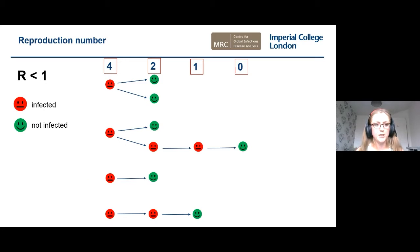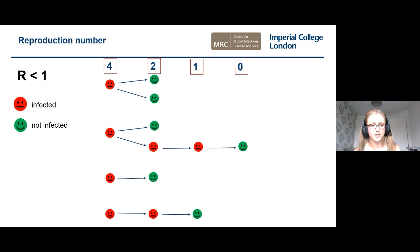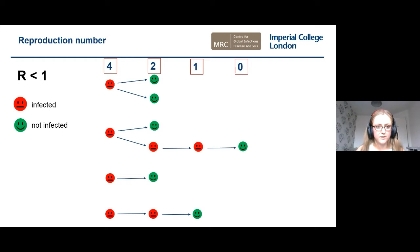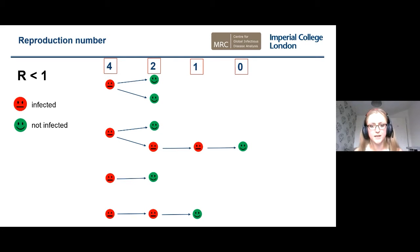What happens if the reproduction number is less than one? If we start with four infected people and R is, say, 0.5, we'd expect only one in every two infected people to infect one more person. So we can see that the top person went on to infect nobody — that chain of transmission has ended. The second person did go on to infect somebody else, and then that person infected somebody else, but again the infection dies out. This is what happens when an epidemic is dying out.